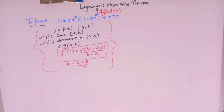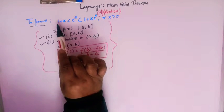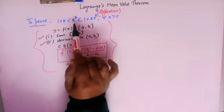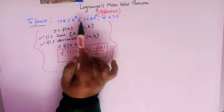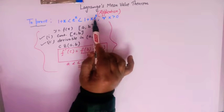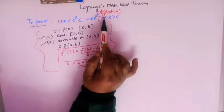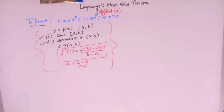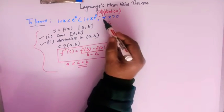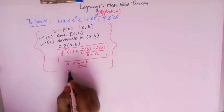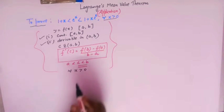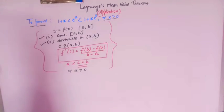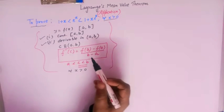Now let us come to our actual problem. We have to prove the inequality: 1 + x < e^x < (1 + x)·e^x, for all x greater than 0. So here x is a positive quantity.